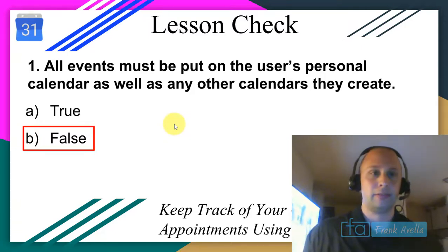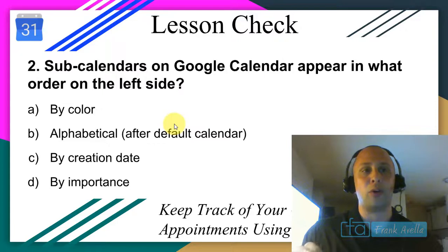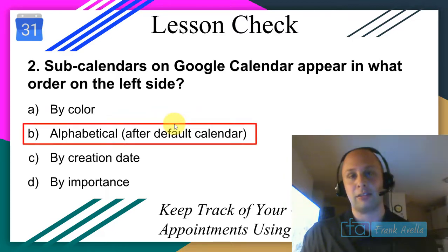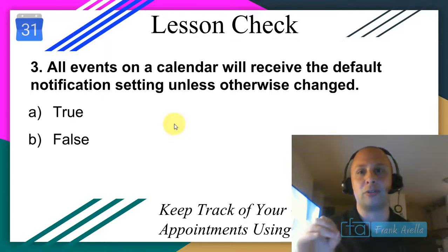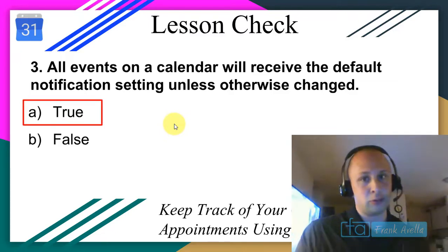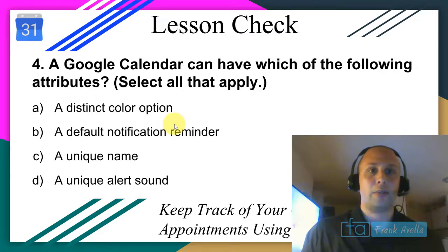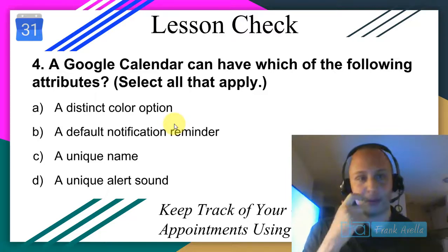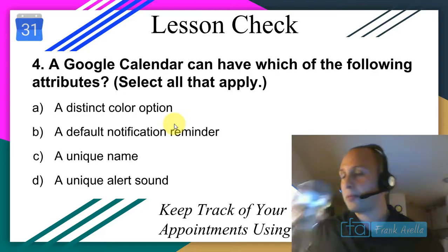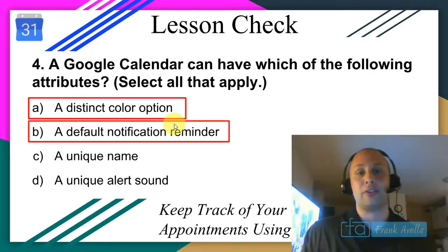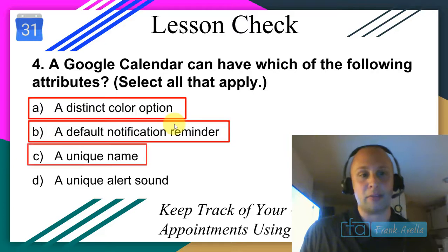Sub-calendars on Google Calendar appear in alphabetical order. All events on a calendar will receive the default notification setting unless otherwise changed — that's true. A Google Calendar can have a distinct color, a default notification reminder you can change, and a unique name, but it does not have an alert sound.